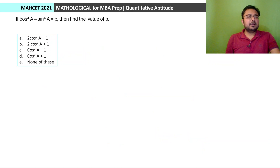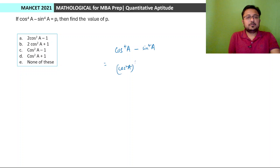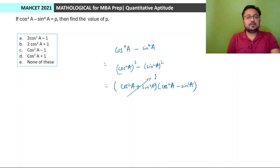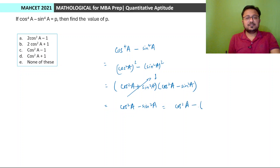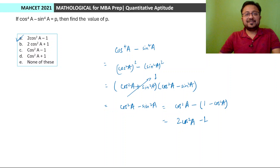Next: If cos⁴a − sin⁴a = p, what is the value of p? We write cos⁴a − sin⁴a as (cos²a)² − (sin²a)², which factors as (cos²a + sin²a)(cos²a − sin²a) = 1 × (cos²a − sin²a) = cos²a − sin²a. Converting sin²a = 1 − cos²a: cos²a − (1 − cos²a) = 2cos²a − 1. Option A is the answer.